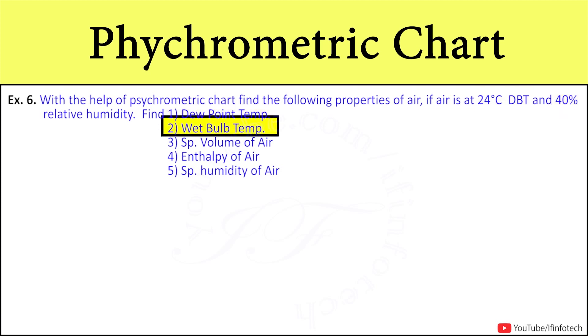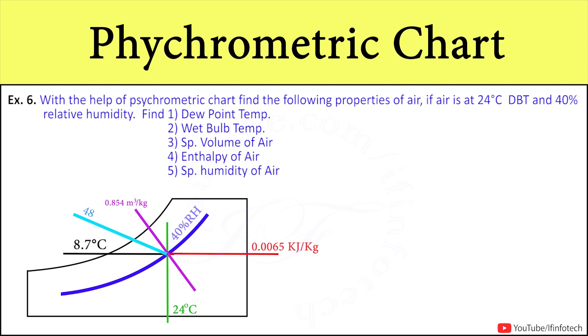Find dew point temperature, wet bulb temperature, specific volume of air, enthalpy of air, and specific humidity of air. Here, we have to plot the process on psychrometric chart.